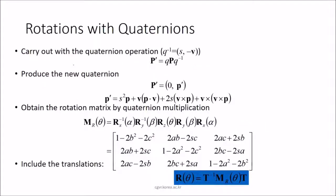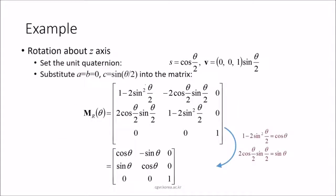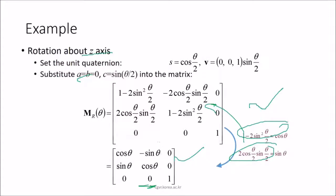To carry out quaternion rotation, q-inverse = s minus v, and p-dash = q·p·q-inverse. This produces a new quaternion p-dash = s²p + vp·v + 2s(v×p) + v(v·p). The rotation matrix is obtained through quaternion multiplication. For example, to rotate about the z-axis using quaternions, set s = cos(θ/2), v = (0, 0, sin(θ/2)), substitute a = b = 0, c = sin(θ/2) into the quaternion rotation matrix.